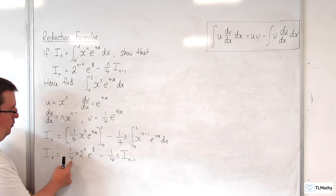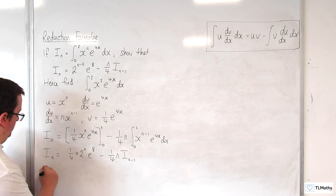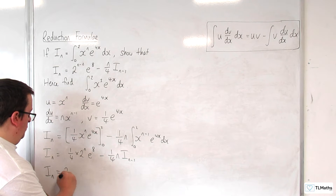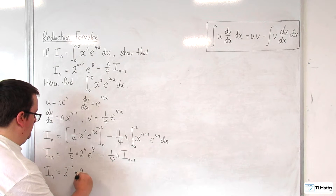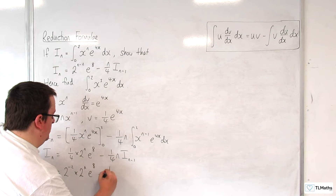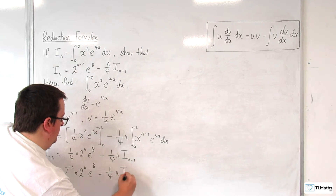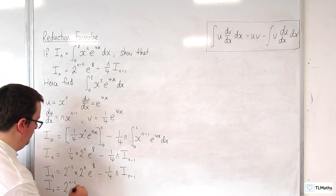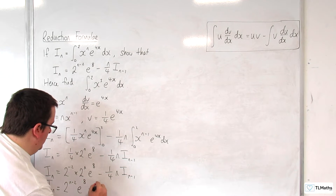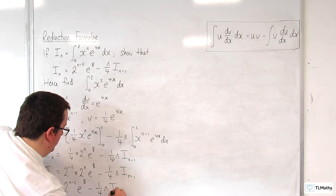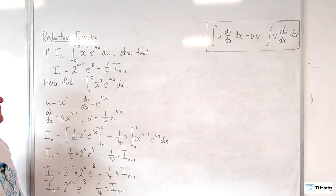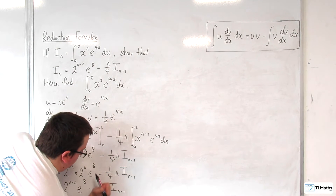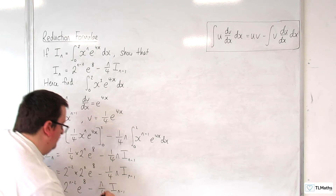Now, 4 is 2 squared, so I_n is equal to 2 to the minus 2 times 2 to the n times e to the 8, take away 1 quarter n times I_(n minus 1). So I_n equals 2 to the n minus 2 times e to the 8, take away n over 4 times I_(n minus 1), as required. We can rewrite 1 quarter n as n over 4 so it's in exactly the same form.